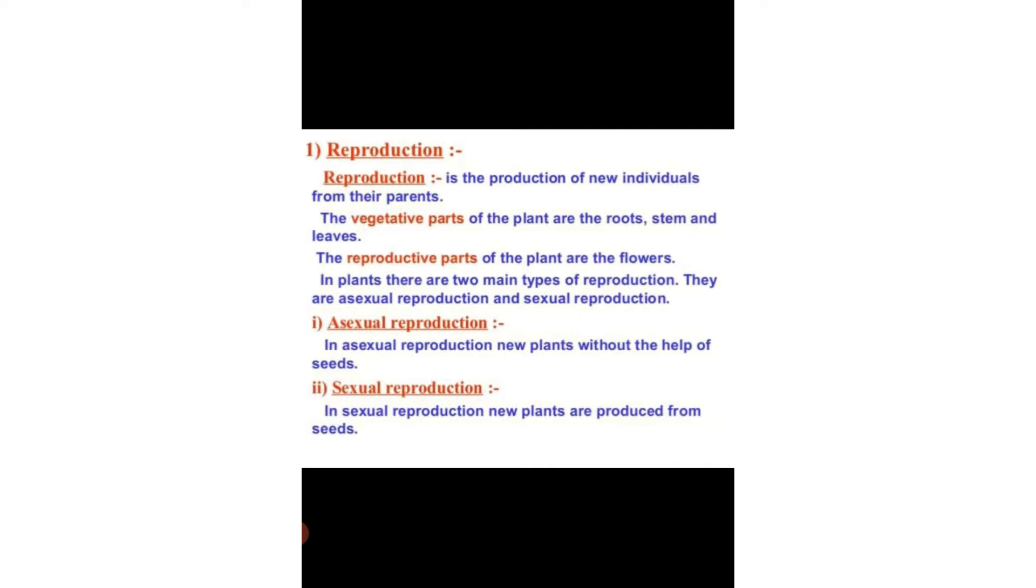First is asexual reproduction. In asexual reproduction, new plants are produced without the help of seeds. Whereas in sexual reproduction, new plants are produced from seeds.